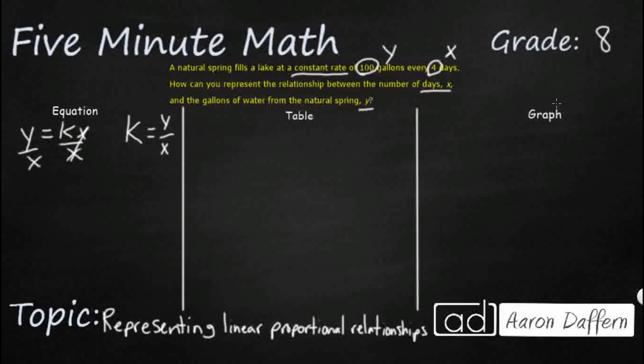Some of you might be able to eyeball it already, but we know that our k is going to be our y. So what they give us is 100 gallons, and it is at a constant rate, over our x of 4 days. So 100 divided by 4 is going to be 25. So if we wanted to represent this simple relationship in this form, we would make our k equal 25.